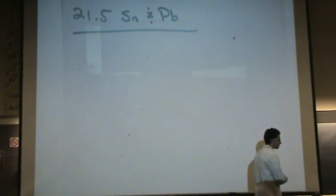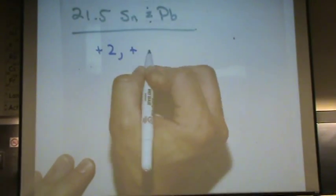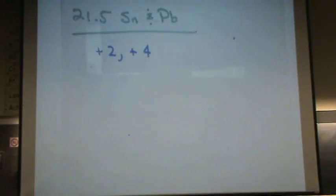Tin and lead. Let me say a little bit about these. What are the common charges for tin and lead if you have your periodic table out? According to the inert pair effect, plus two and plus four for tin and lead.